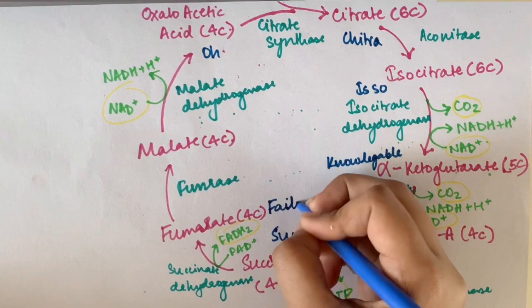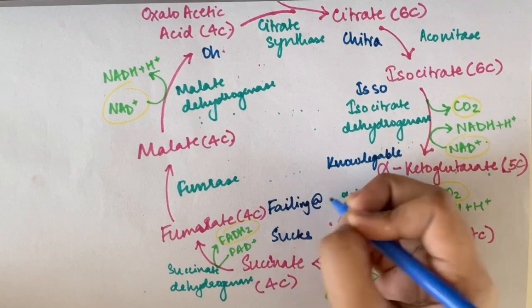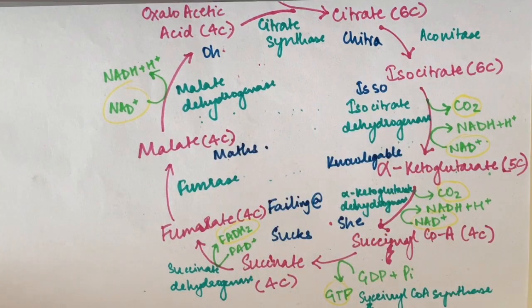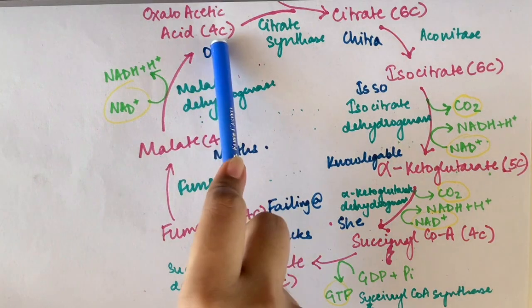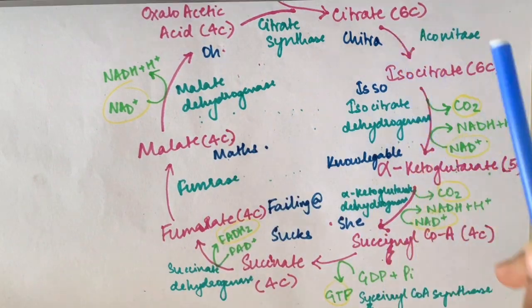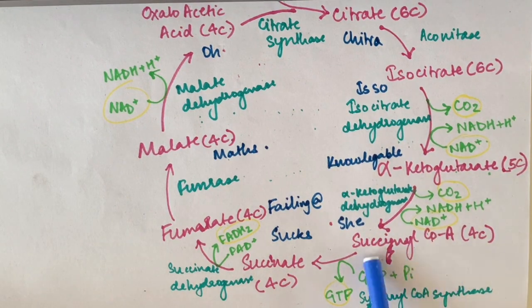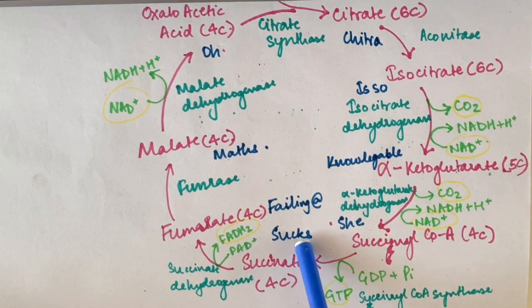I'm just gonna go through how you're supposed to remember this mnemonic. It goes like: O oxaloacetic acid, Chitra citrate, is so isocitrate, knowledgeable alpha-ketoglutarate, she succinyl coenzyme, sucks succinate, fumarate failing, malate maths.